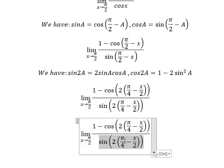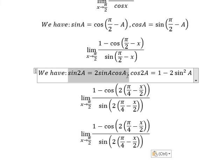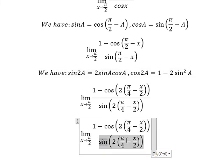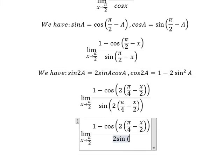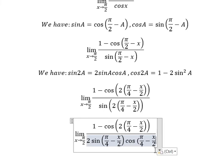So for this one we just use this formula here and we will have 2 sine of π/4 minus x/2 times cosine of π/4 minus x/2.